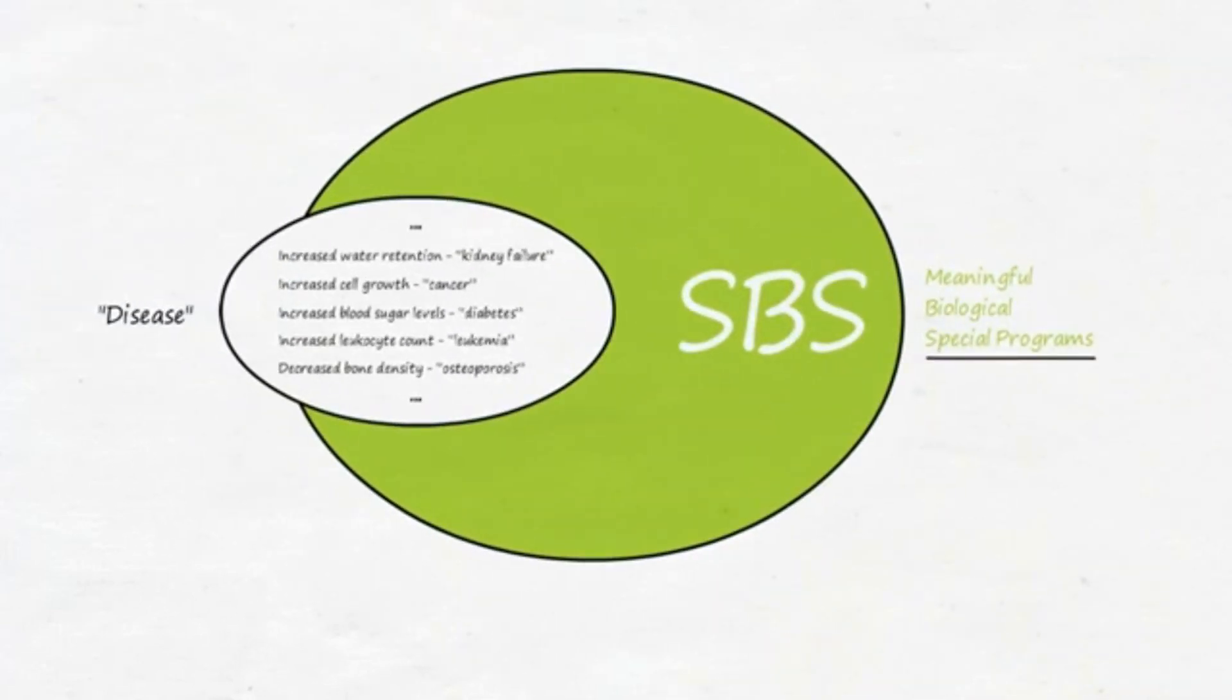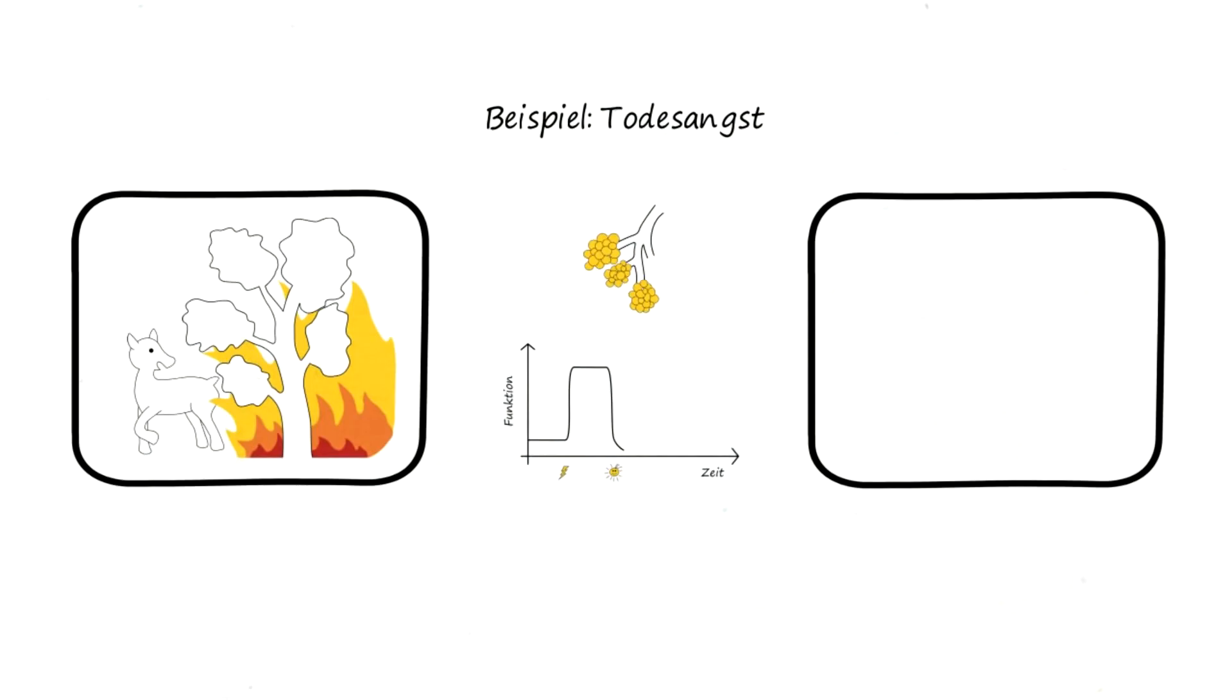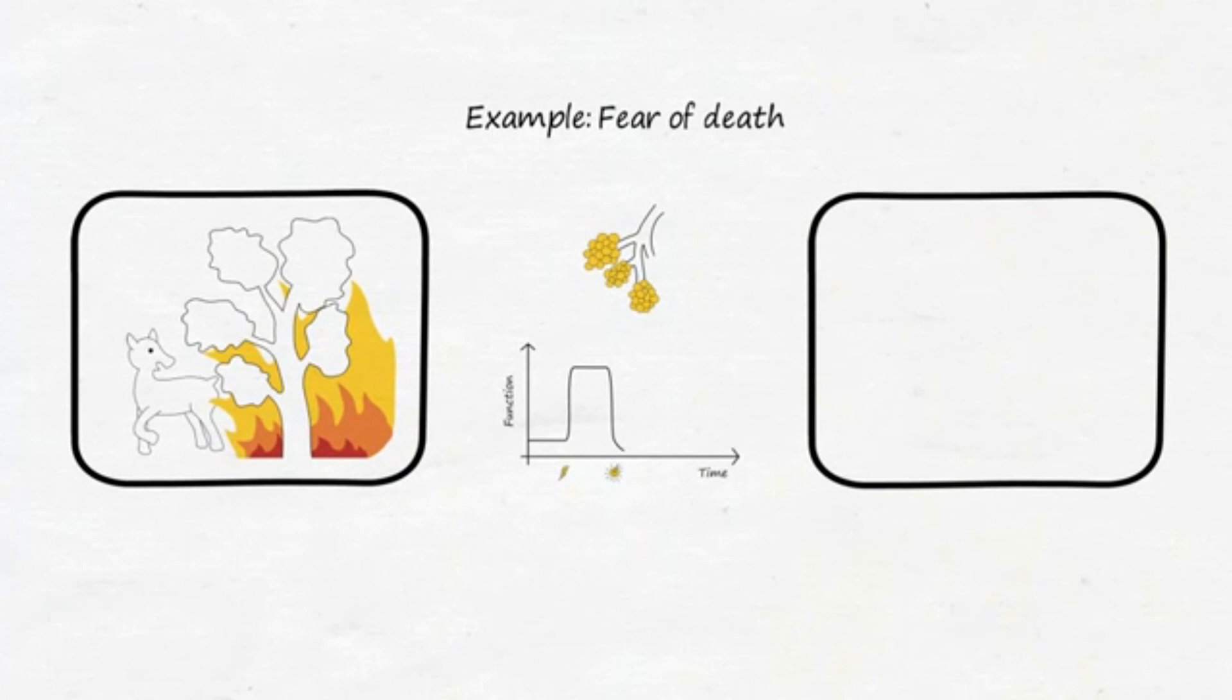Almost everything we have until now referred to as disease occurs within the framework of such a meaningful special biological program. Let us examine the same examples in a modern, unnatural way of life, typical of civilized humans. Fear of death lasts only a short time in nature. Either the animal escapes the threat or it dies.